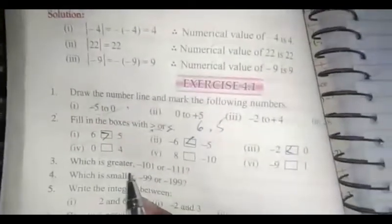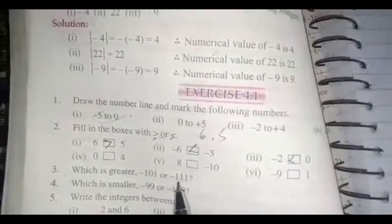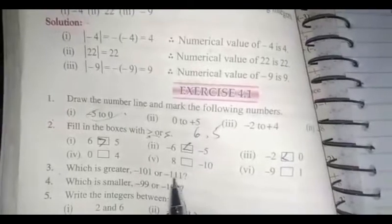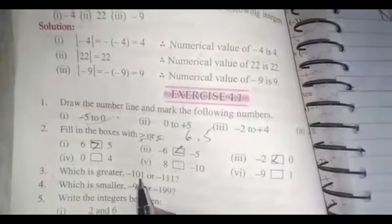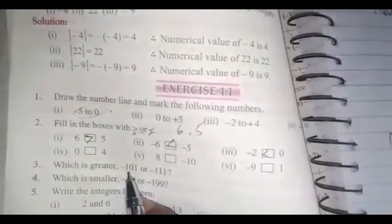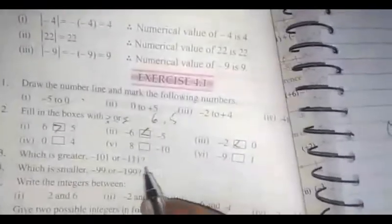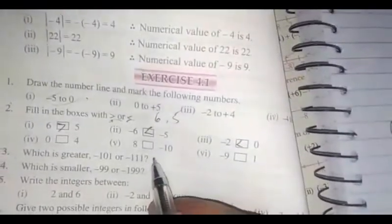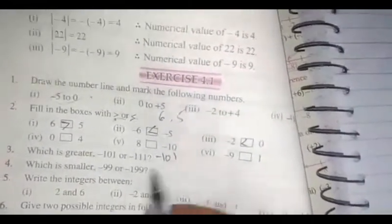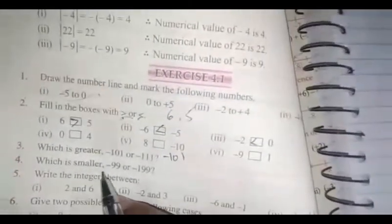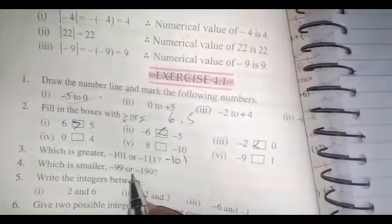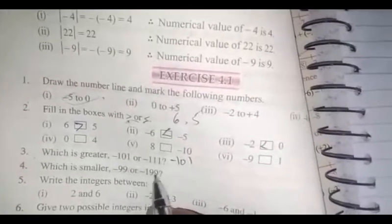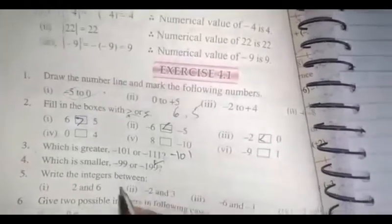Question number 3: which is greater? Minus 111 or minus 1, 0, 1? The answer is minus 1, 0, 1 is greater than minus 111. Which is smaller? Minus 99 or minus 199? Minus 199 is smaller.